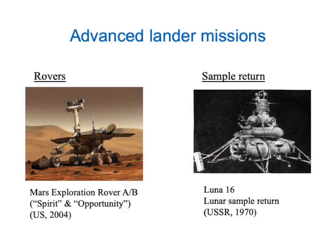At the top we see one of the first pictures of Mars sent back by Viking 1, and on the bottom we see a picture of the surface of Venus from Venera 13. There are variations of the basic lander that are even more technologically challenging. The first is a rover — the challenge is to land a moving vehicle on the surface of another world and use it to explore the surroundings. This has a big payoff because you can explore a larger area.